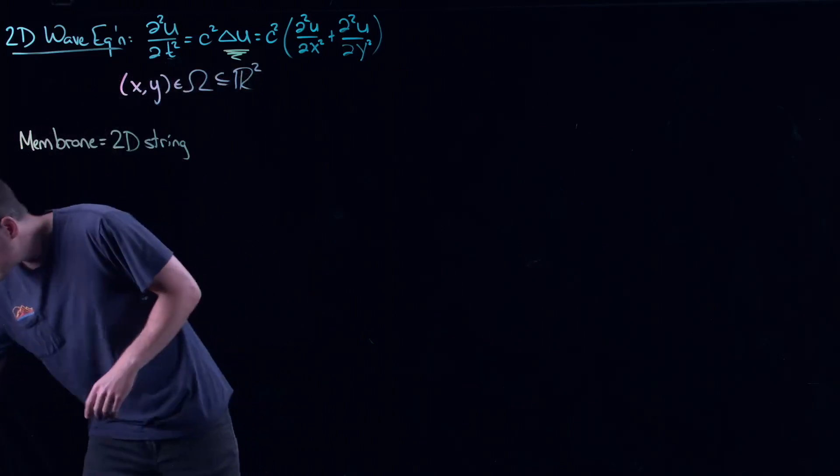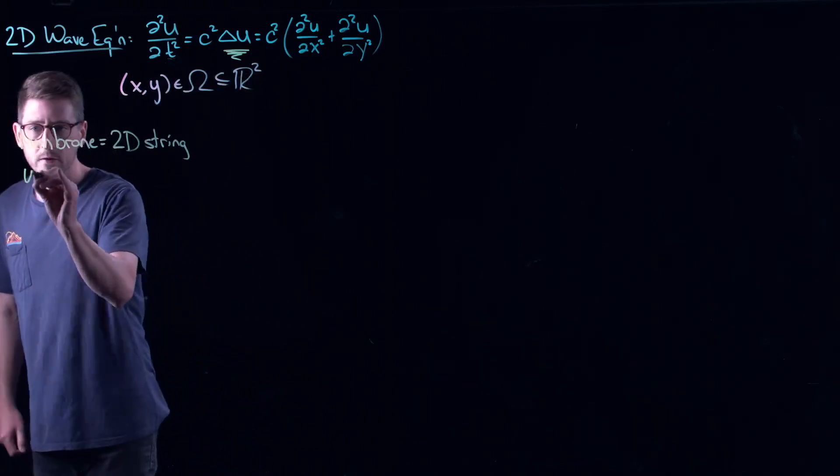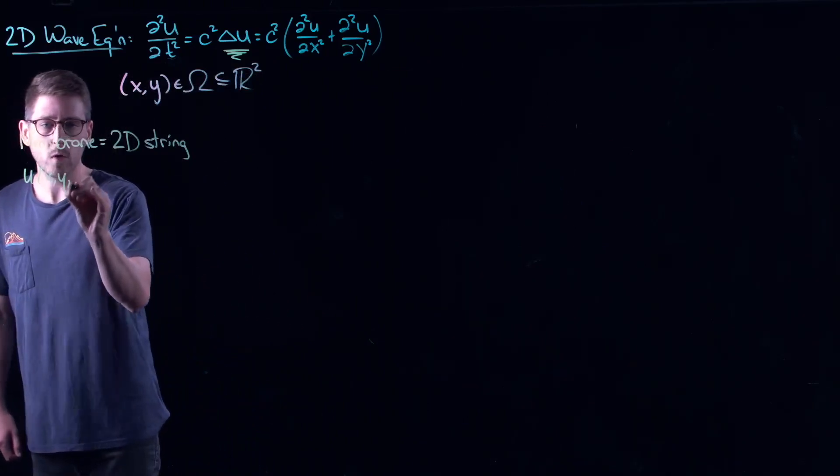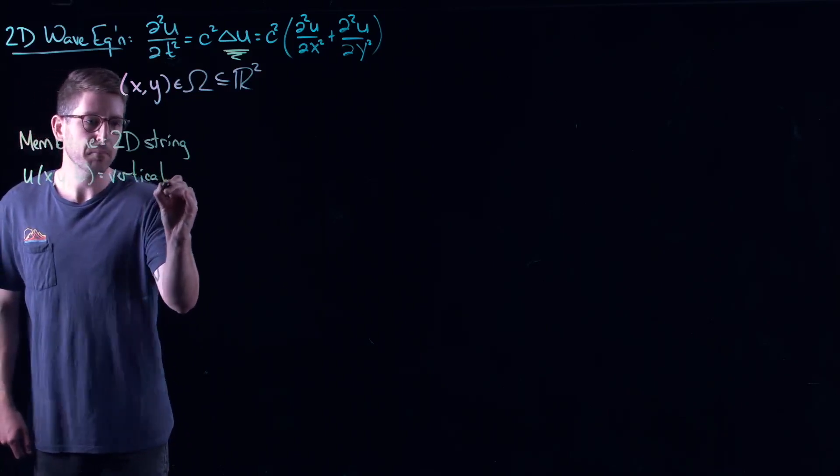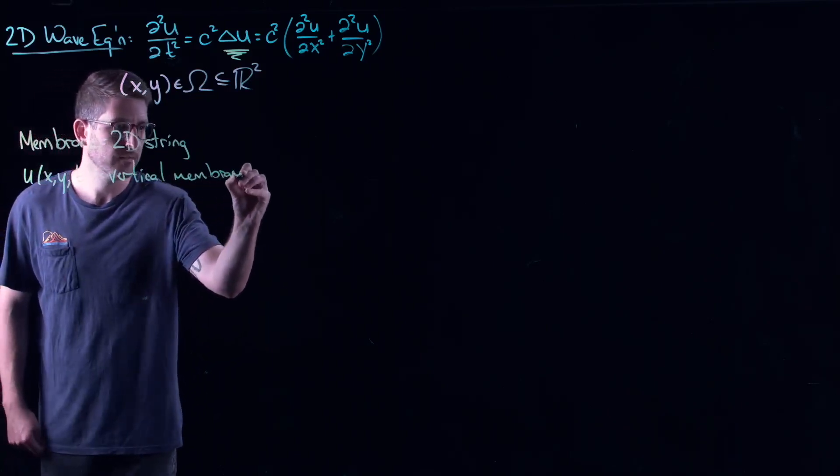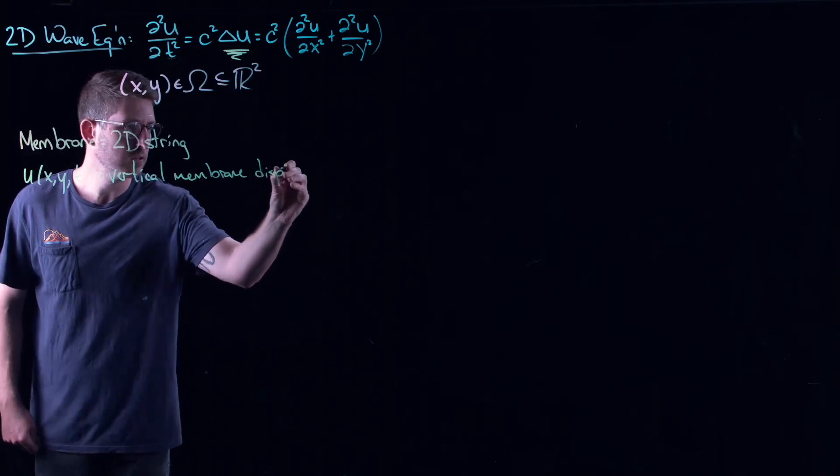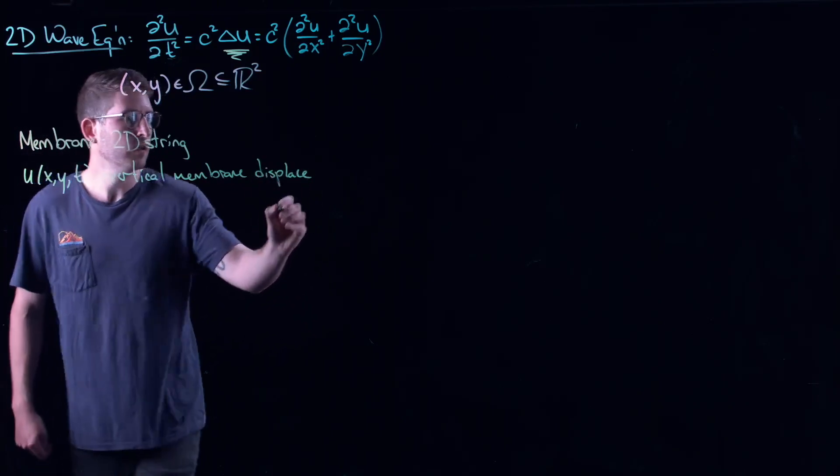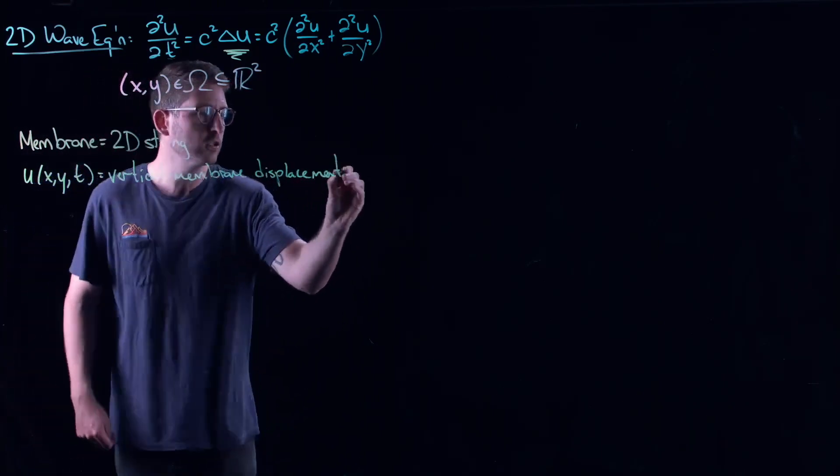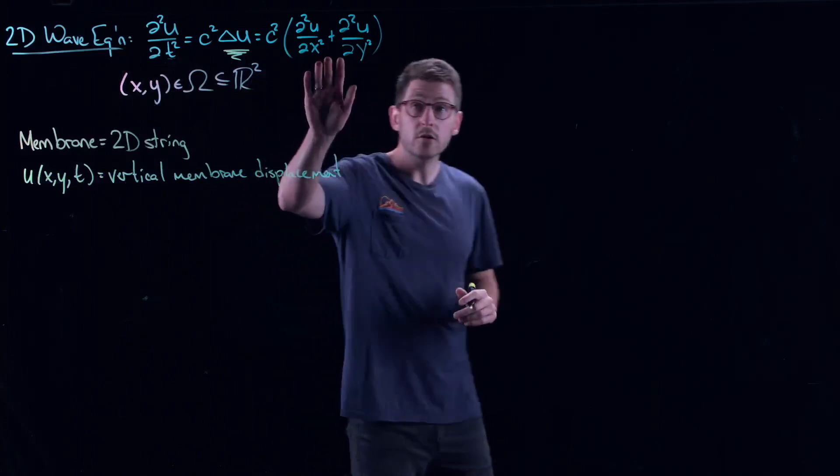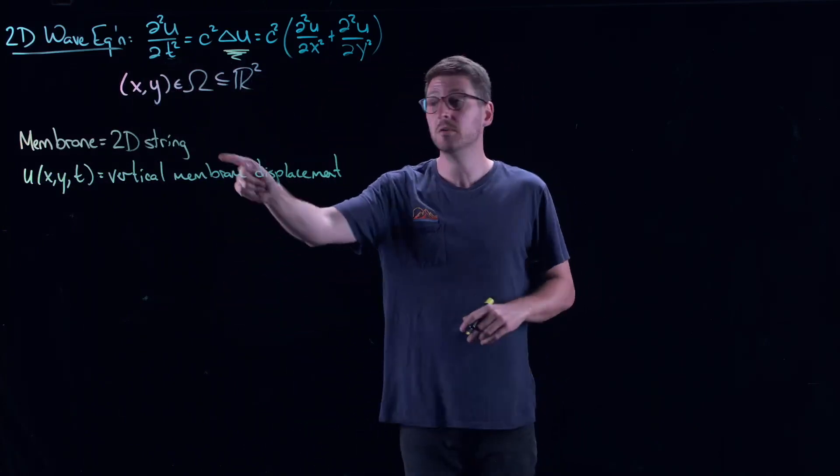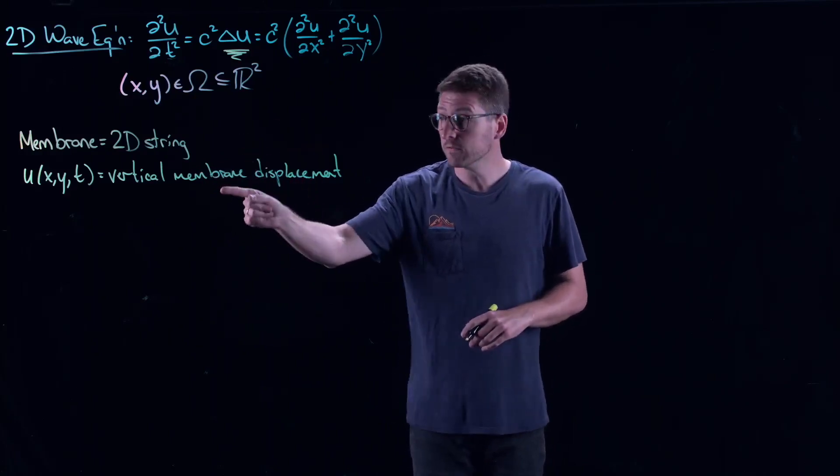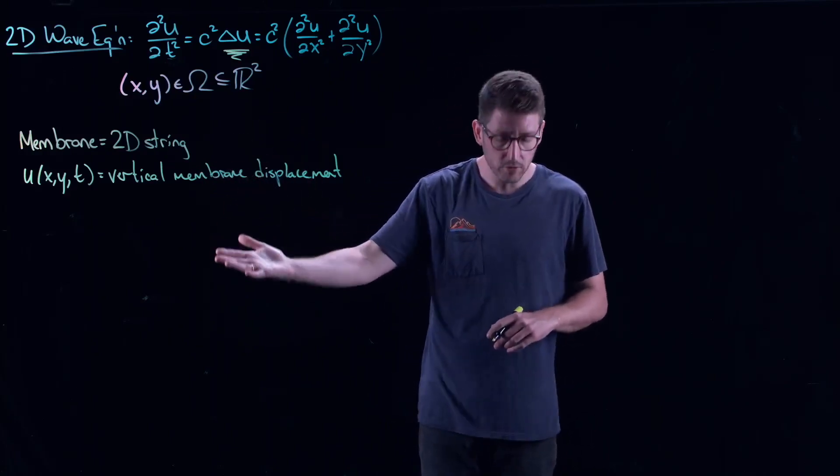If you remember what we did with the original wave equation, we talked about a string, and it's sort of describing its vertical displacement. In this case, we have u of x, y, comma t. This is the vertical membrane displacement. So it's the same fundamental principles.